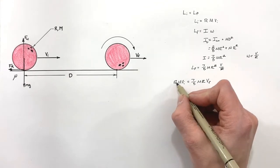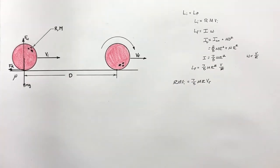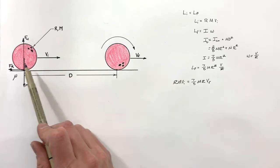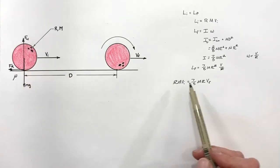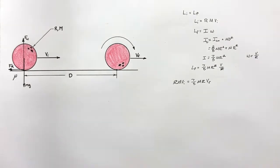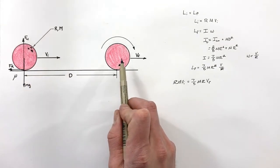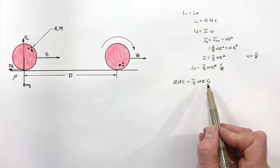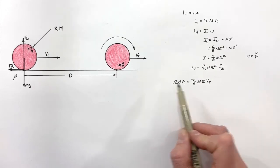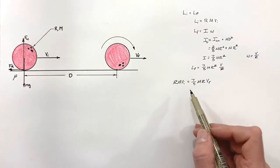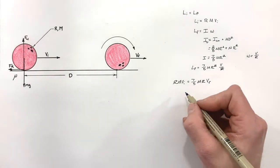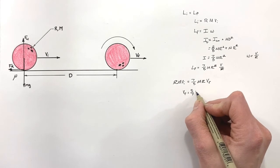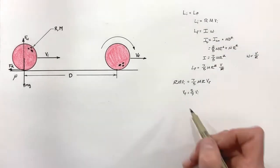We get a nice cancellation of the radii and the mass of the ball as well. So it doesn't matter whether you're using a 25-pound bowling ball or a 12-pound kids' ball — the mass doesn't affect the outcome. Regardless of how far the ball skids down the lane before rolling without slipping, the final velocity relative to the initial velocity — independent of mass, radius, or friction — is always given by v_final = (5/7)·v_initial.